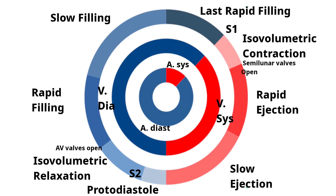The mitral stenosis murmur begins in mid-diastole at the beginning of rapid filling, continues throughout the diastole, and at the end there is a presystolic accentuation due to atrial contraction. This presystolic accentuation will be absent when atrial contraction is not happening, which occurs during atrial fibrillation. So, mitral stenosis complicated with atrial fibrillation will produce a mid-diastolic murmur without any presystolic accentuation.